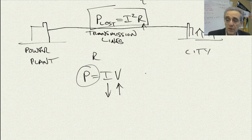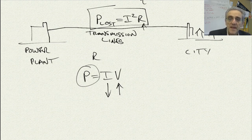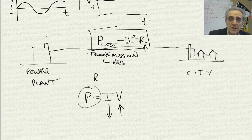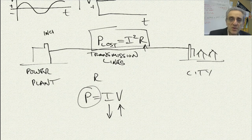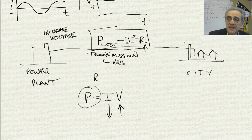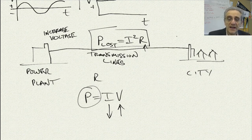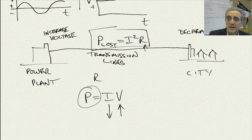So therefore the way that transmission lines can reduce power loss is by increasing the voltage. That means here at the power plant we increase the voltage. And here at the city, obviously we don't want high voltage. We don't want like 10,000 volts going into your house. That would be dangerous. So we have to decrease the voltage.